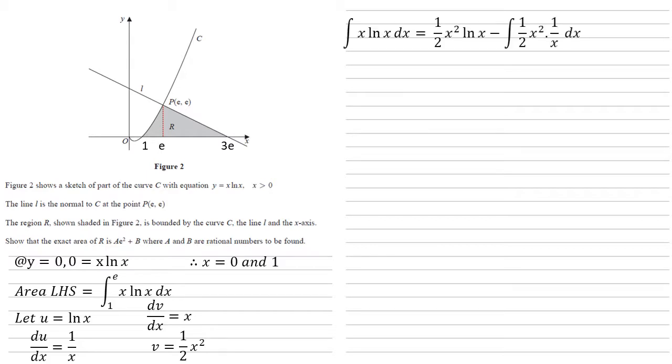So by the formula we get that the integral of x ln x is equal to uv, so half x squared times ln x minus the integral of v du/dx, so a half x squared times 1 over x dx. This is going to be equal to a half x squared ln x minus the integral of a half x dx. So we get a half x squared ln x minus a quarter x squared plus c.